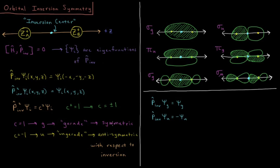A gerata orbital is symmetric with respect to inversion. It has an eigenvalue of plus one for the inversion operator. And a state with the label ungerata is anti-symmetric with respect to inversion. It has an eigenvalue of minus one for the inversion operator.